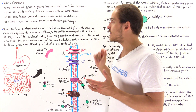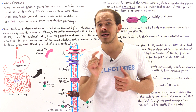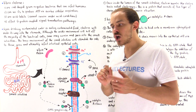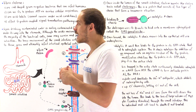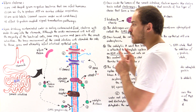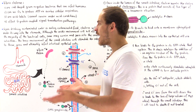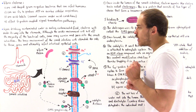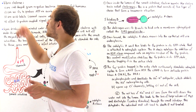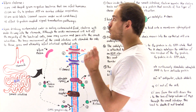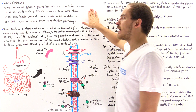Gram-negative basically means it contains a very thin layer of peptidoglycan in the cell envelope. So if we stain it with the purple dye and then wash that dye away, the purple dye will not be able to remain in that cell wall and will be washed away, and the bacterial cell will appear pink under the microscope as shown here. So Vibrio cholerae are curved rod-shaped, gram-negative bacteria that can infect human cells.